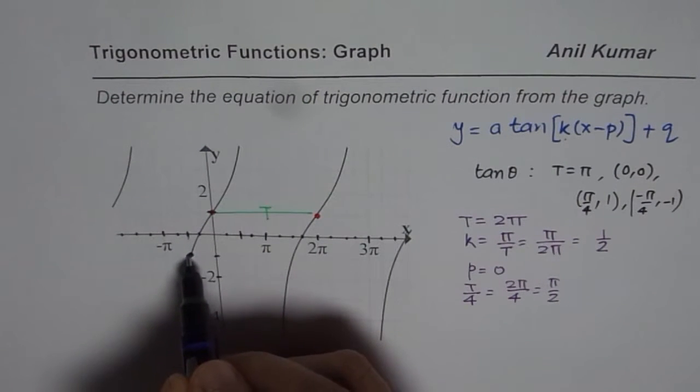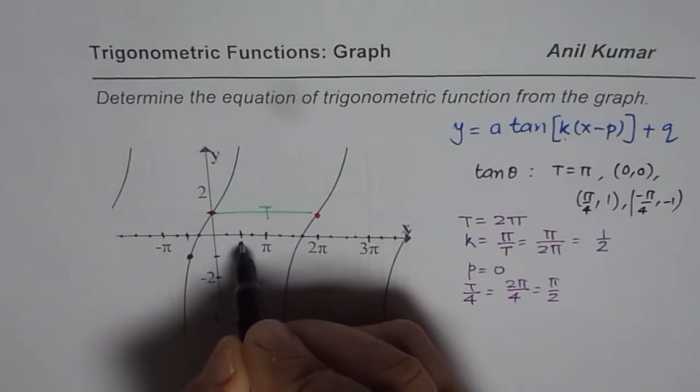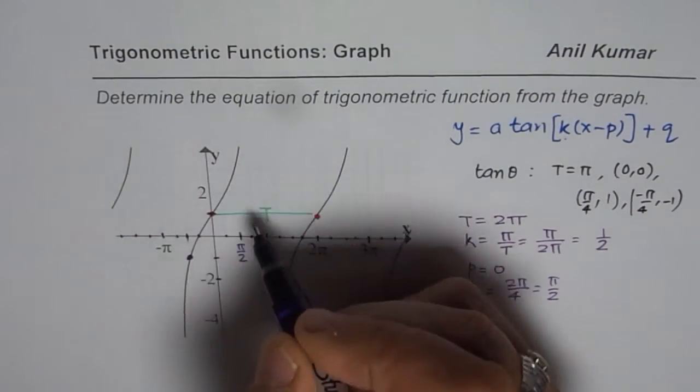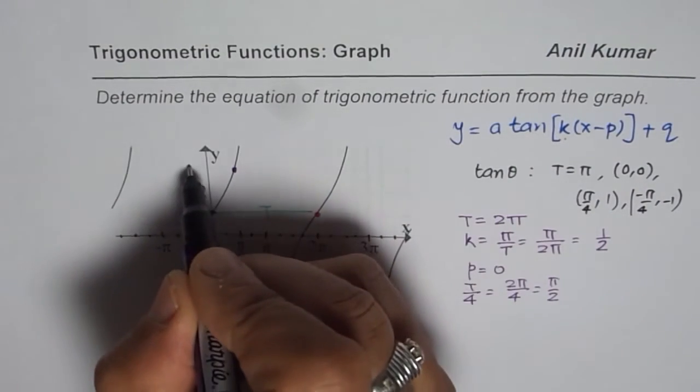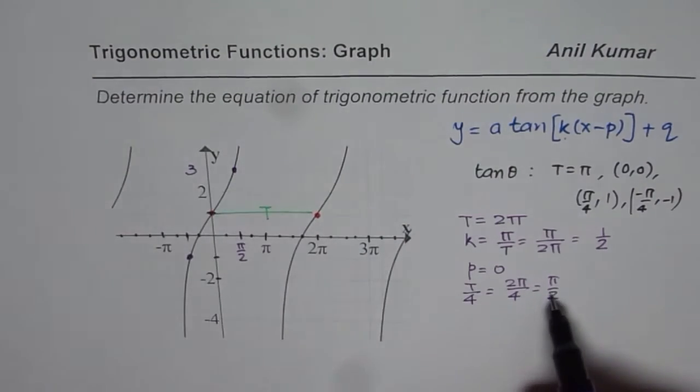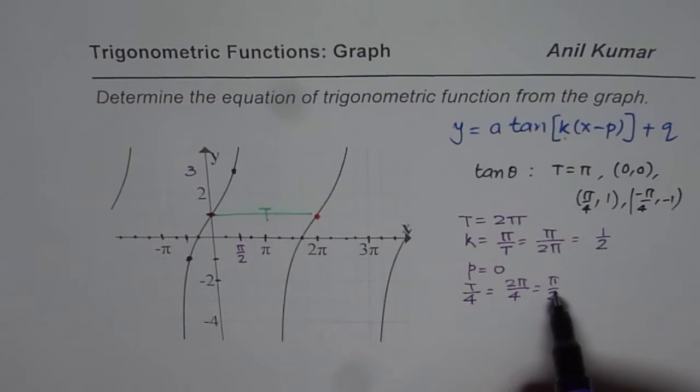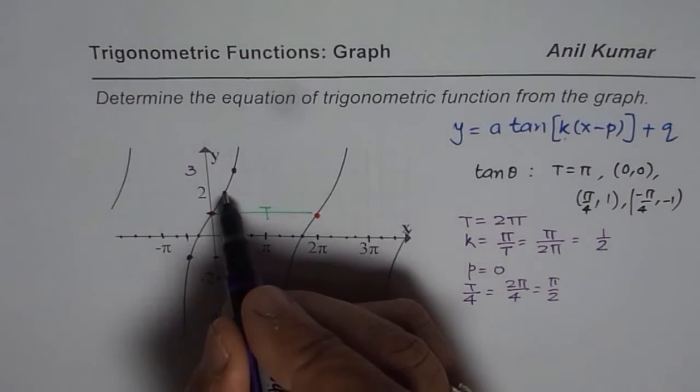And from here, that is pi by 2, if I see where does it meet on the graph, it is at 3, right? So it is at 3. Normally, if it is not vertically stretched, then it will be 1 unit away.